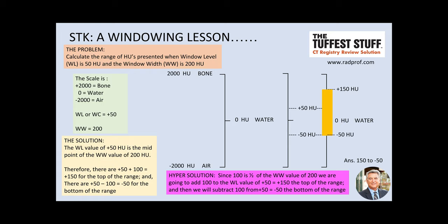Here's where we are at plus 50 Hounsfield units — plus 50 up from zero. The window width is 200, which means on the scale we'll be at a point that is plus 100 and minus 100 from plus 50. When we add 100 to plus 50, we get 150 positive units, which is the top of the range.